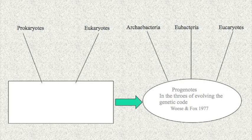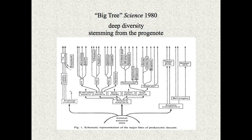The progenote is a state where these somewhat cellular organisms — half-cellular — were in the throes of evolving the genetic code. He doesn't know what these things are. And in 1980, he published his paper in Science, which he always called his big trade. And this was mind-blowing — nothing like this had ever been seen before.